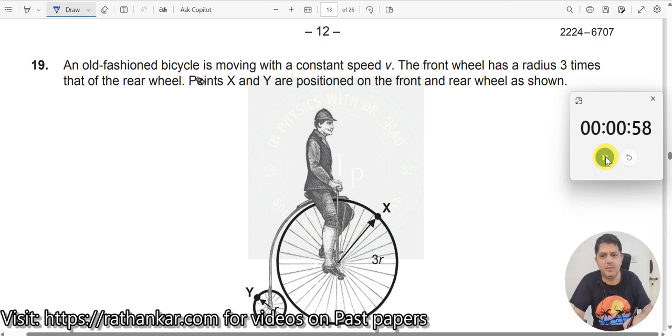Question number 19. An old-fashioned bicycle is moving at a constant speed. What do you mean by constant speed?